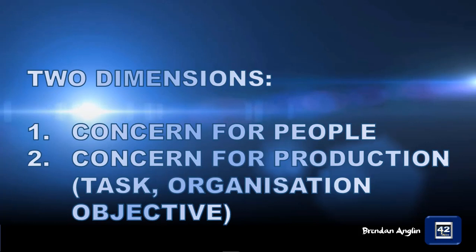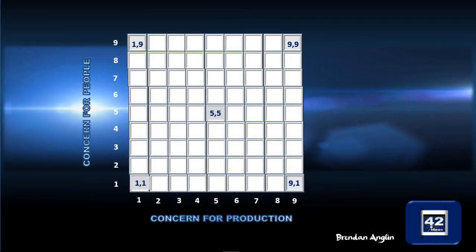There are two dimensions on this leadership or managerial grid: concern for people and concern for production. Concern for production is a focus on the task or the objectives of the organization. When we create this grid, there are nine squares on either side — nine on the x-axis for concern for production, and nine on the y-axis for concern for people.